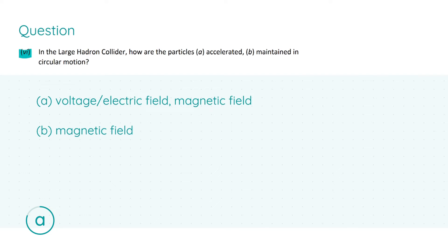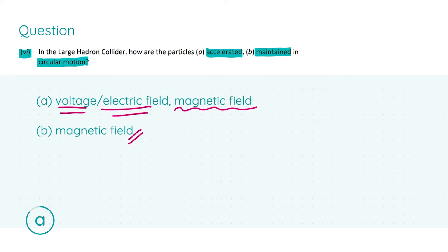Moving on to part six, we are asked how particles are accelerated and maintained in circular motion in the Large Hadron Collider. Particles are accelerated by an electric field or voltage to high speeds. A magnetic field supplies a centripetal force which accelerates particles by changing the direction of their motion, and this centripetal force caused by the magnetic field maintains the circular motion. Your first correct answer gets four marks and your second gets three marks, giving a total of seven.